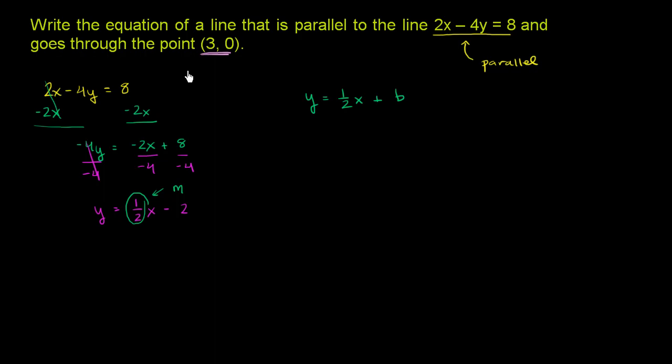On this line, the one we care about, when x is 3, y is 0. When x is 3, y equals 0. Or we could say 0 equals 1 half times 3 plus b. We just have to find a b that sets up this equation. So then when x equals 3, y equals 0. So we get 0 equals 3 halves plus b.